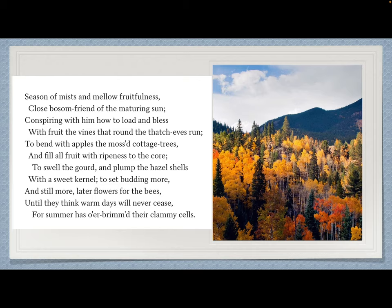'Close bosom friend of the maturing sun' — the sun is turning in its course and has become matured after summer. This season is a friend of the sun because the sun is responsible for ripening all sorts of fruits and vegetables. 'Conspiring with him' — this season plans with the sun how to load and bless with fruit the vines. The grape vines are loaded with fruit and blessed because of the sun and the autumn; sun and autumn conspire and plan together how to ripen the fruit.